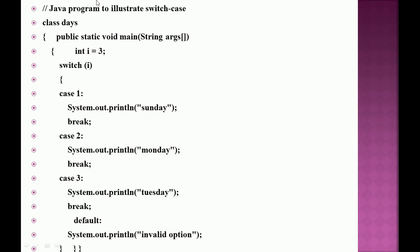As a program to illustrate switch case, I've used a variable 'i' of integer type initialized to 3. Switch i will send control directly to case 3, which has the statement printing 'Tuesday'. We get output as 'Tuesday' because case value 3 is satisfied, and the break statement moves the control out. If the value is 4 and case 4 is not defined, the control moves to the default case and displays 'invalid option'.